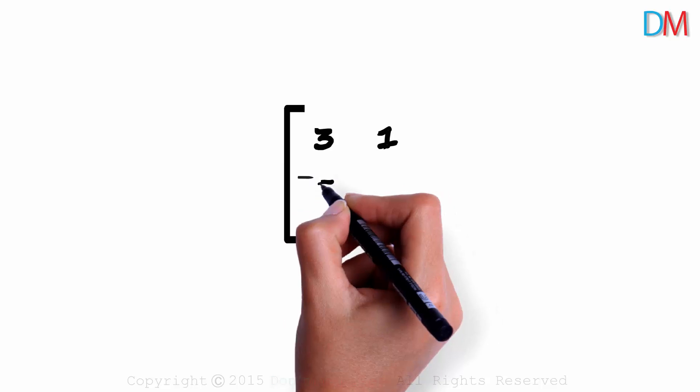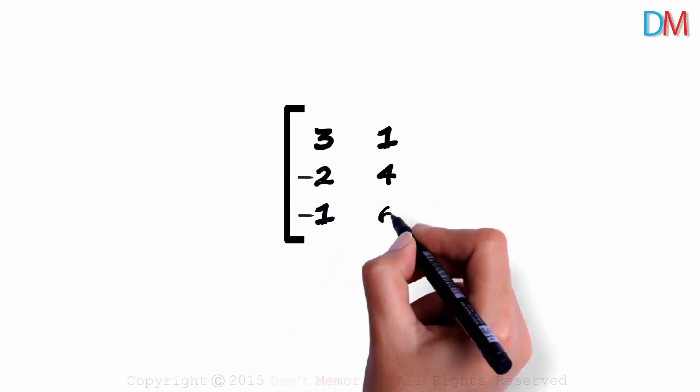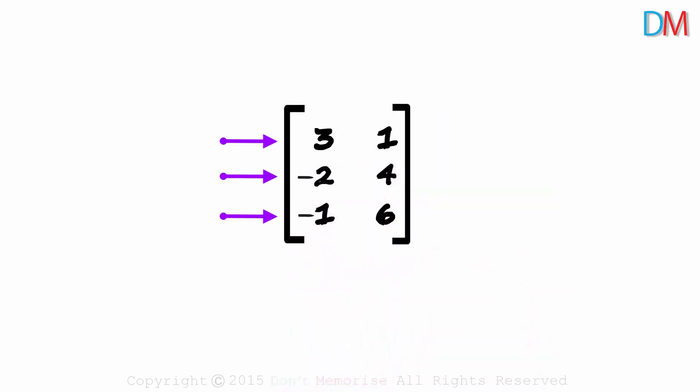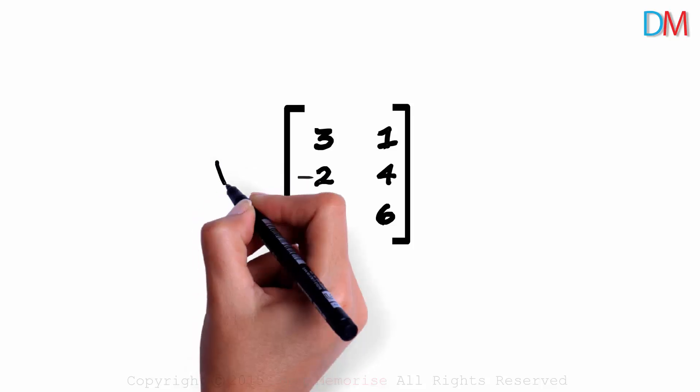Let's create a matrix which has three rows and two columns. Yes, three rows and two columns. Matrices are named using capital letters. We can call this one matrix A.